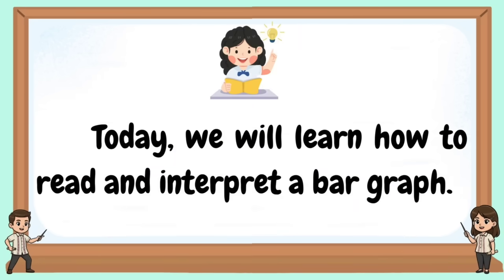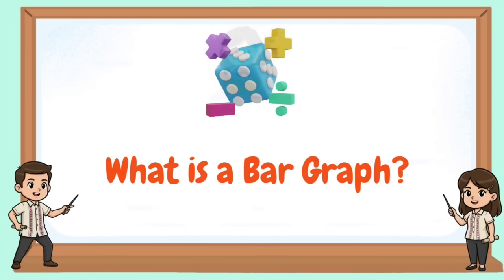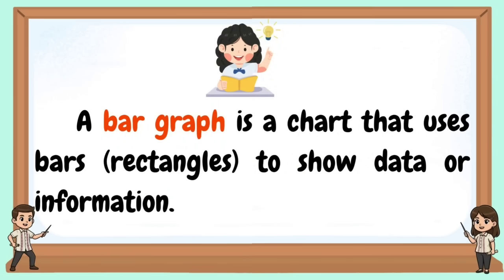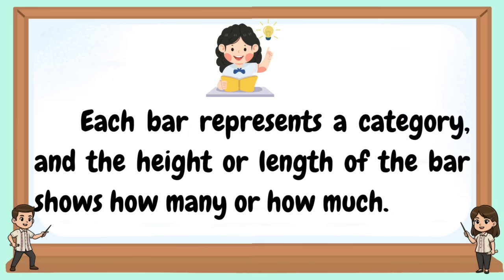Today, we will learn how to read and interpret a bar graph. What is a bar graph? A bar graph is a chart that uses bars to show data or information. Each bar represents a category, and the height or length of the bar shows how many or how much.